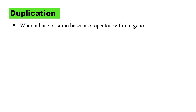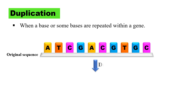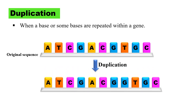Next, duplication — as the name indicates, duplication means when one or more base pairs get duplicated, they repeat. Here is the original sequence, and in case of duplication, one or more bases repeat themselves. For example, this guanine molecule — you can compare from the original sequence that this guanine under the red circle shows a duplication. So this is the duplication point mutation.